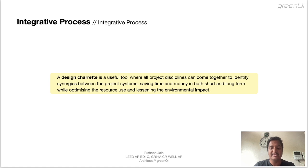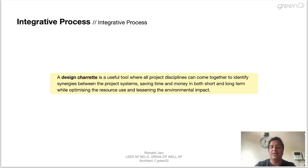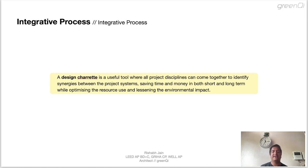Now that you know what an integrative process is, it is important to know what a design charrette is. A design charrette is a useful tool when all the project disciplines come together to identify synergies between project teams, saving time and money in both short and long term while optimizing resource use and lessening environmental impact. It is basically when all the stakeholders meet before the beginning of the design process. For example, an architect recommends using a material which is expensive but environmentally friendly, but the contractor, who is also part of the discussion, knows the structure cannot be made with that material and recommends a different material which is cheap and also environmentally good. Such practice will help avoid issues in the long run and help save funds and resources. Please pause the video and take a note of this definition.